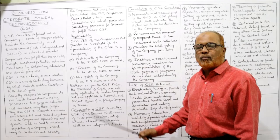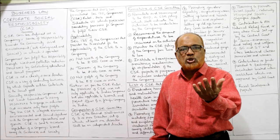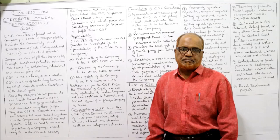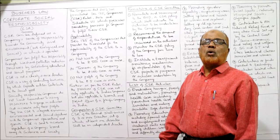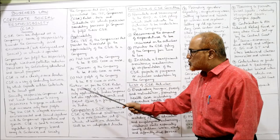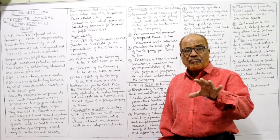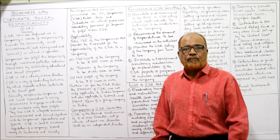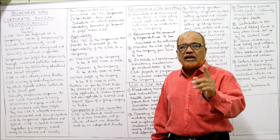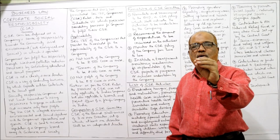Section 135 of the Companies Act provides the threshold for the applicability of CSR. If a company crosses that limit, CSR becomes mandatory. The three thresholds are: first, net worth of the company to be ₹500 crore or more — compulsory; second, turnover of the company to be ₹1,000 crore or more — compulsory; third, net profit of the company to be ₹5 crore or more in a particular financial year — compulsory. If any one of these conditions is met, CSR is mandatory.